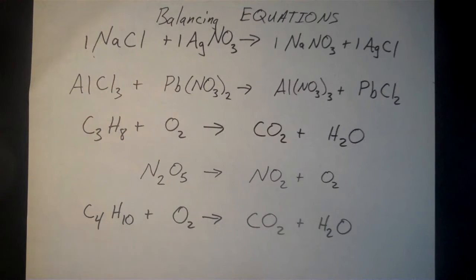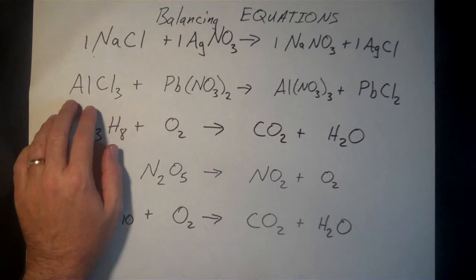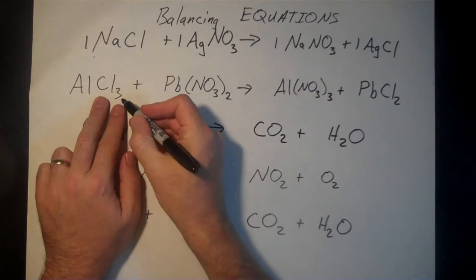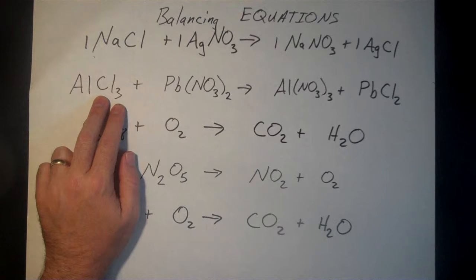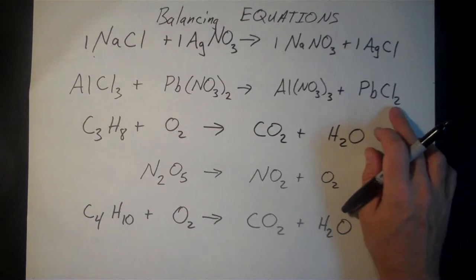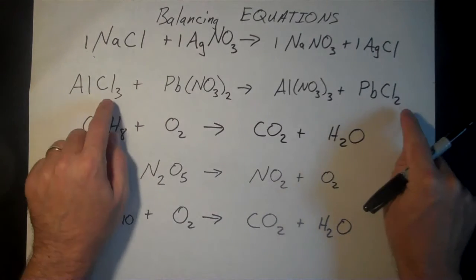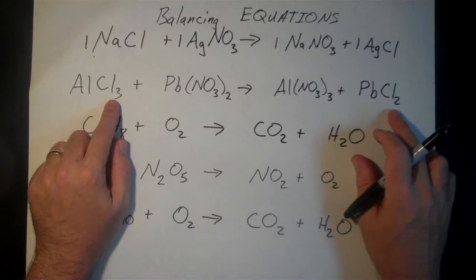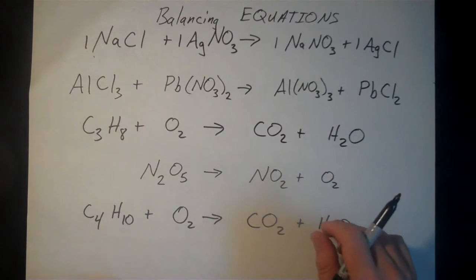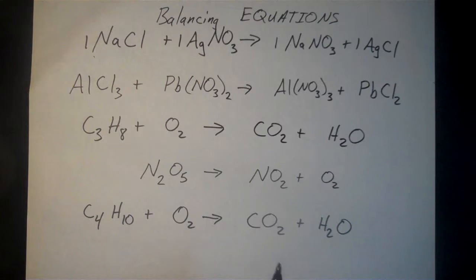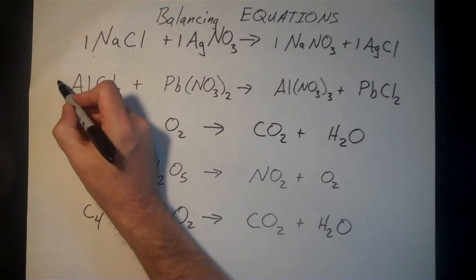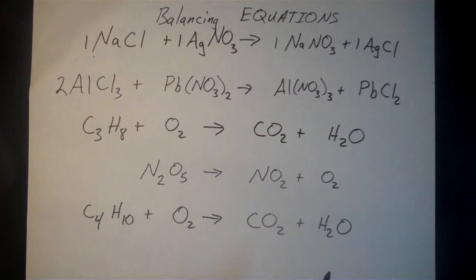This is aluminum chloride with lead-2 nitrate that we're going to be balancing. We've got one aluminum on the reactant side, one aluminum on the product side — so far, so good. There are three chlorines; that's what the subscript three tells us. On the product side, the only place chlorine shows up is in PbCl2, which has two chlorines. We need to bring both of these up to a common number — think of it like finding a common denominator. We can raise them both up to six.